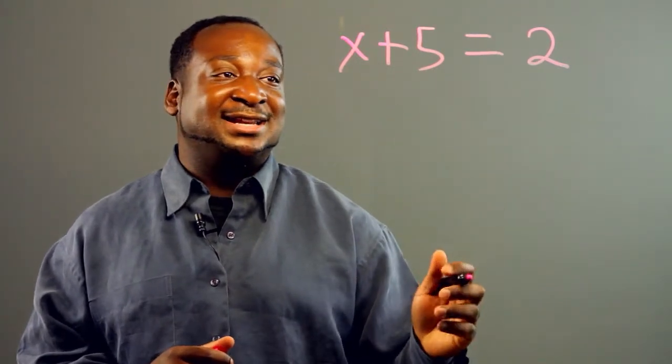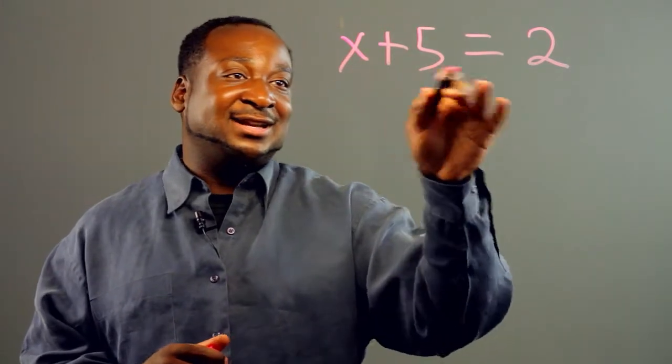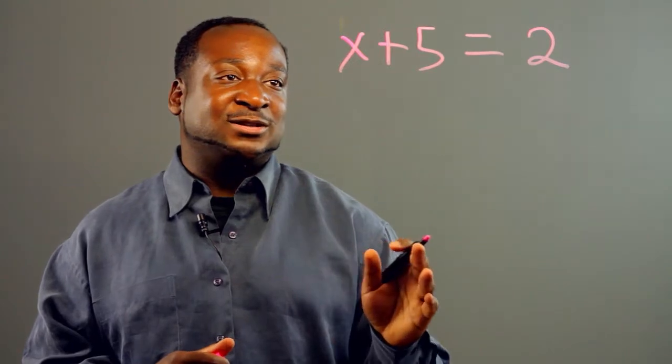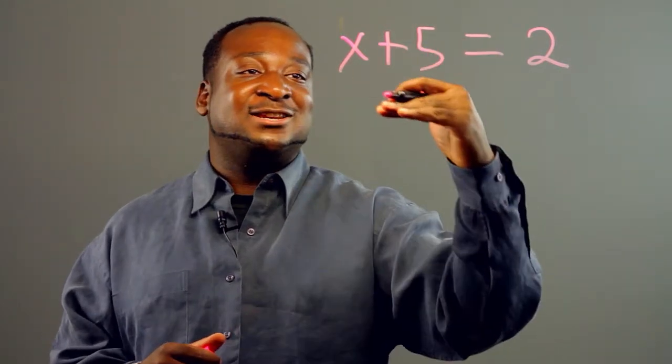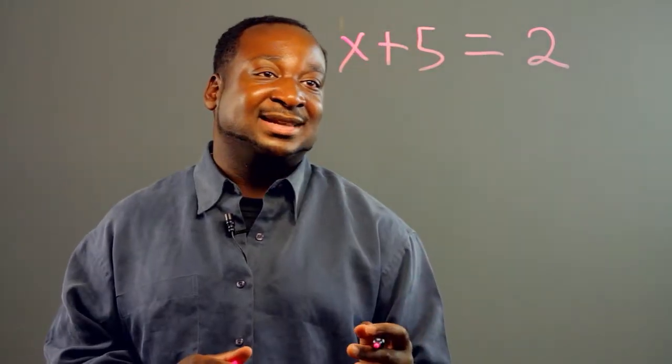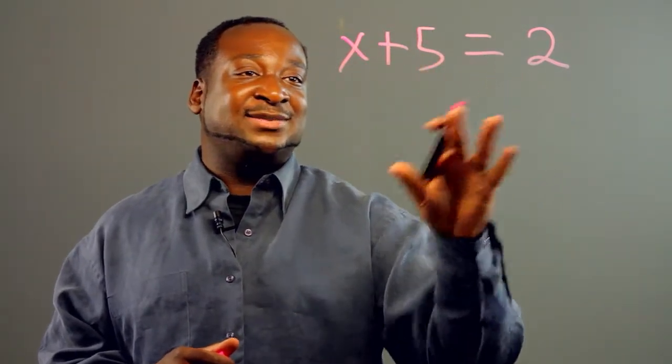And we know that there's only one value that can satisfy this equation. And what you want to do is, you always want to move into the unknown value. So you want to do the same thing to both sides.